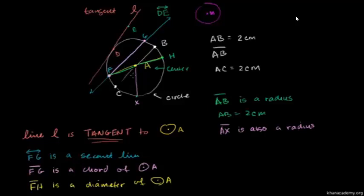So a diameter is made up of two radii, and the length of a diameter is going to be twice the length of a radius. So the length of FH is going to be equal to the length of segment FA plus the length of segment AH.